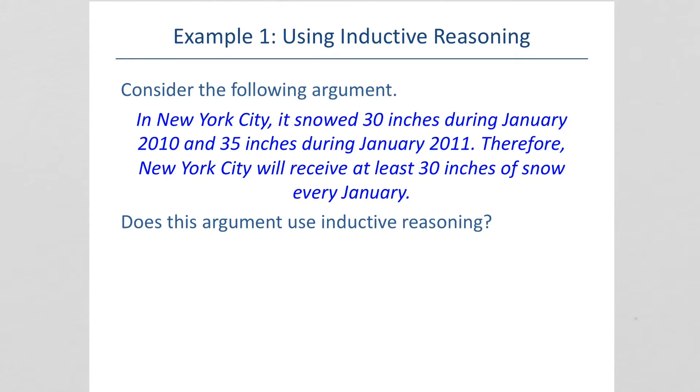Consider this argument. In New York City, it snowed 30 inches during January 2010 and 35 inches during January 2011. Therefore, New York City will receive at least 30 inches of snow every January. Does this argument use inductive reasoning?